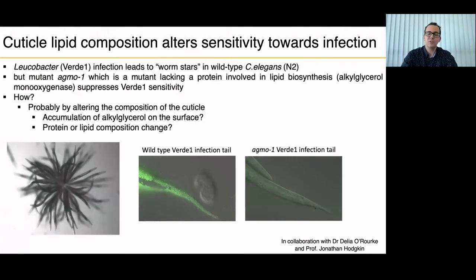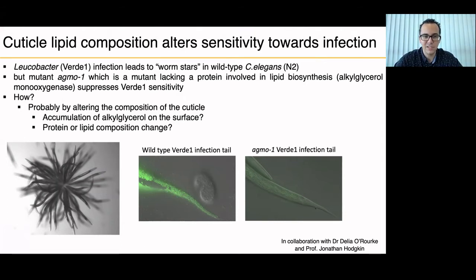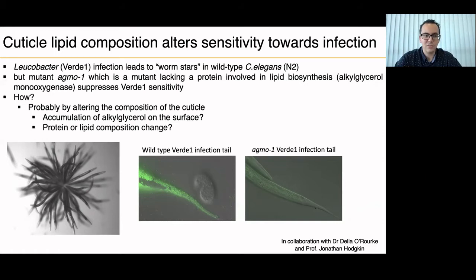Our collaborators Dr. Delia Oroch and Professor Jonathan Hodgkin, working on C. elegans, had a very interesting mutant strain that was resistant to some pathogens. A leukobacter called Verdi1 infection leads to what they call the 'worm star' — the tail of the wild-type C. elegans becomes crowded by the leukobacter, they glue together, and the worm dies. But they found that Agmo1, a mutant lacking a protein involved in lipid biosynthesis — alkylglycerol monooxygenase — which handles ether-linked lipids, suppressed this Verdi1 sensitivity. The mutant tail shows no infection.